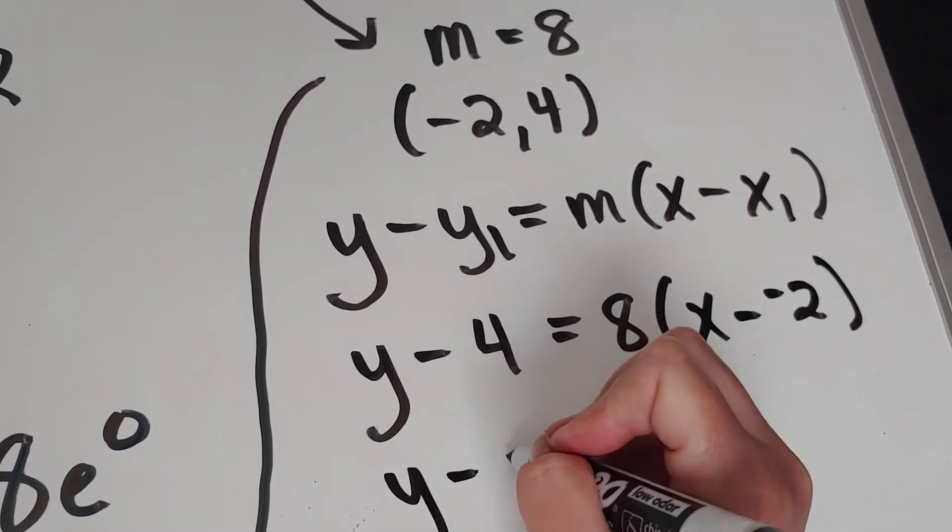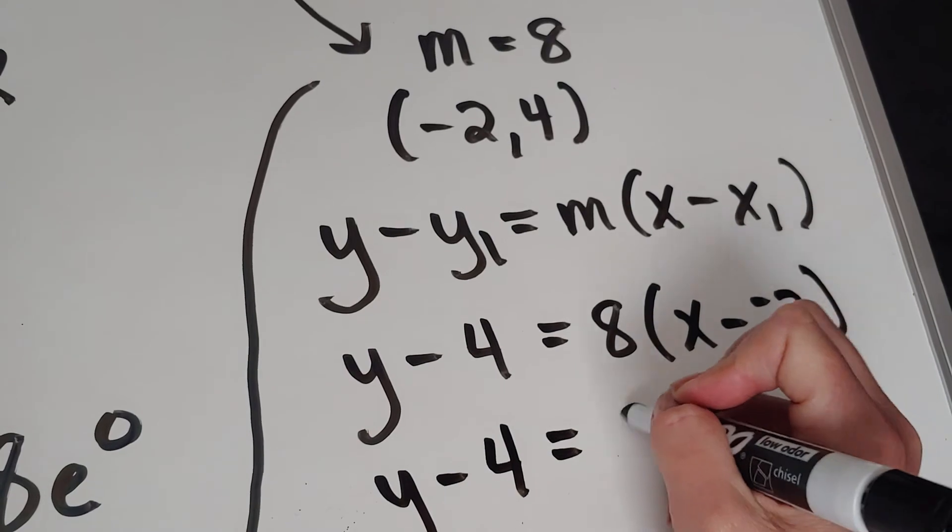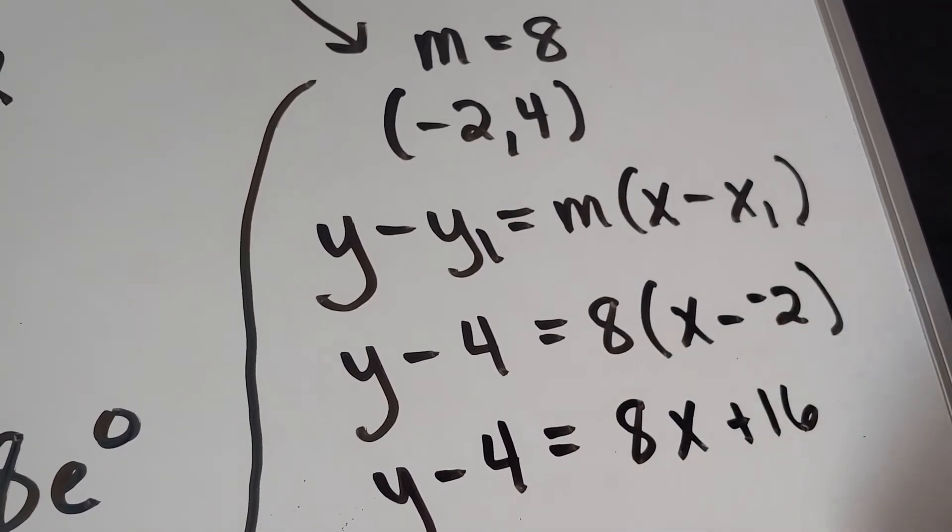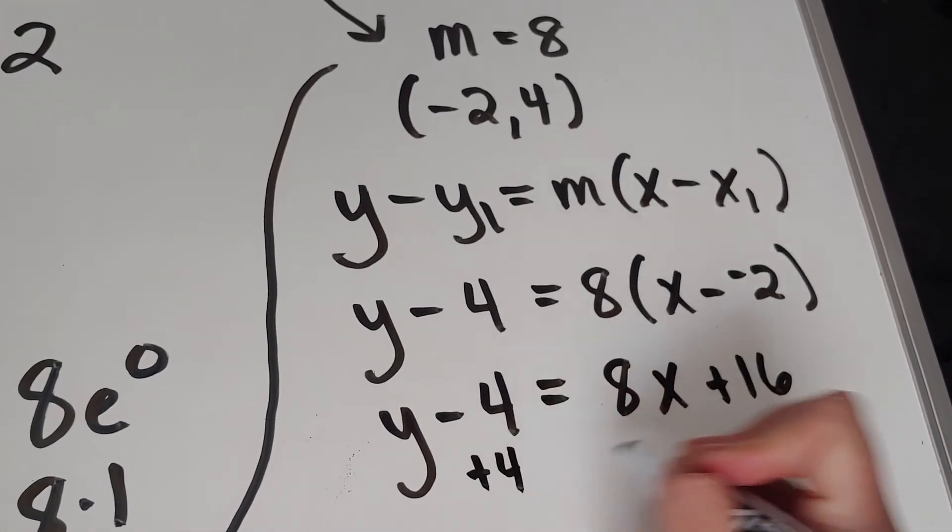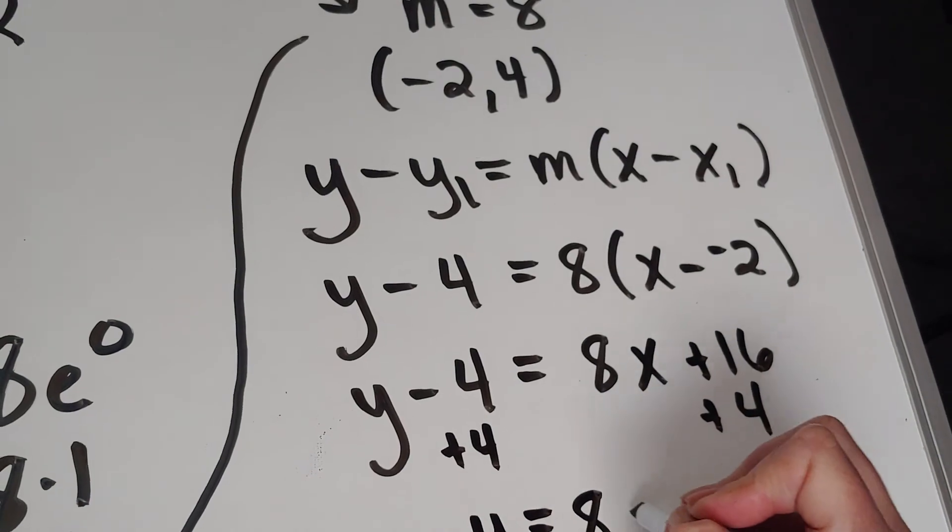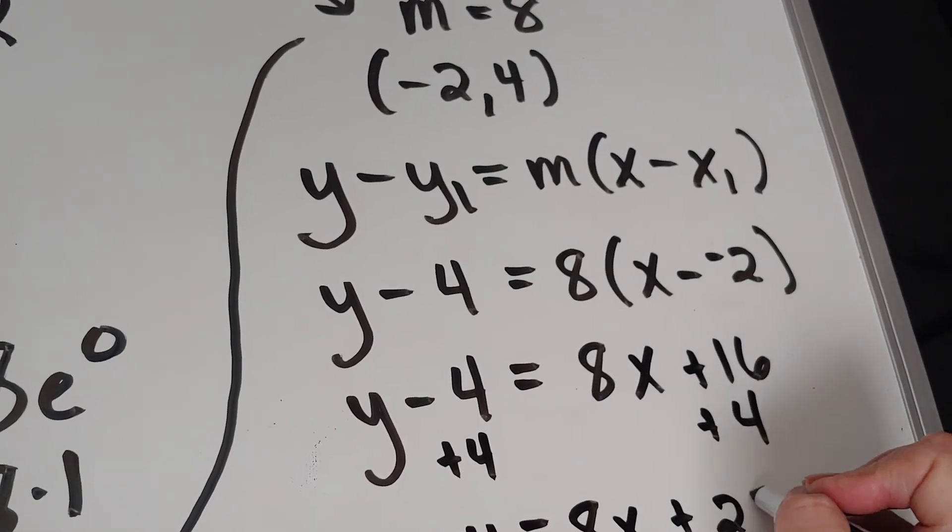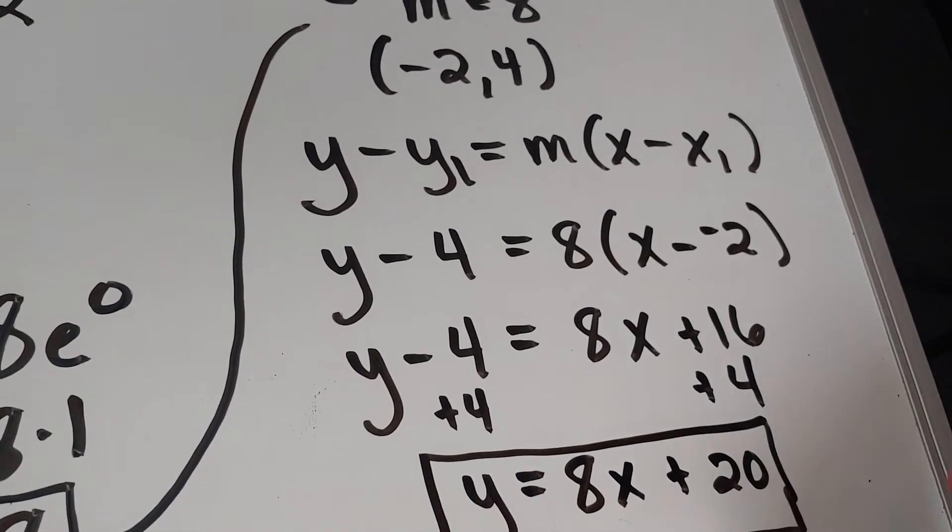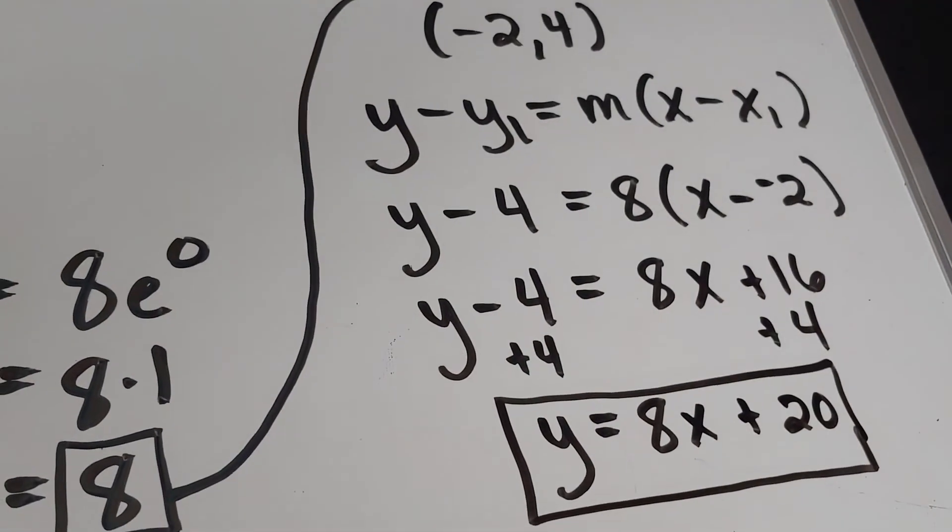I'm going to get y minus 4 equals 8x plus 2 times 8 is plus 16. And last but not least, let's move that 4 to the other side. So the equation of my tangent line to my curve at that specific point is y equals 8x plus 20. All right, good luck on your homework.